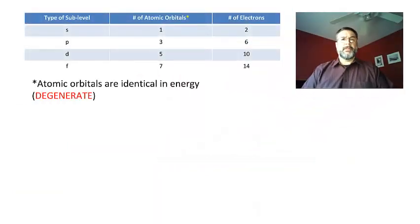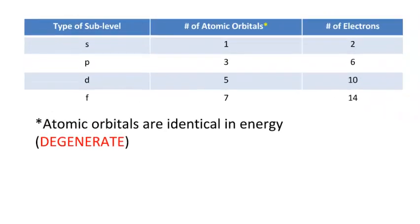Now, just to summarize, we saw a table like this in the last video that we have instead of now the type of classroom, we have the type of sublevel. If it's an s sublevel, there's one atomic orbital in there, there are two electrons maximum. If it's a p sublevel, there are three atomic orbitals in there, six electrons maximum. If it's a d sublevel, there are five atomic orbitals in there, ten electrons maximum. And if it's an f sublevel, there are seven atomic orbitals in there, fourteen electrons maximum. Now, remember that if you have more than one atomic orbital in a sublevel, the energies of those orbitals are exactly the same. They're identical in energy. They're not the same in position or really in kind of how they look, but their position is a little different. But they're identical in energy, and the word that we use for that is degenerate. So when you hear the word degenerate, that means that we're talking about things of identical energy.